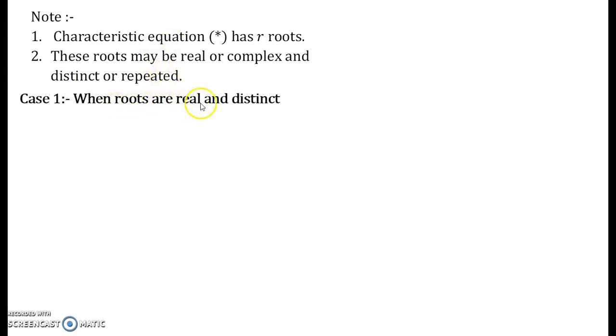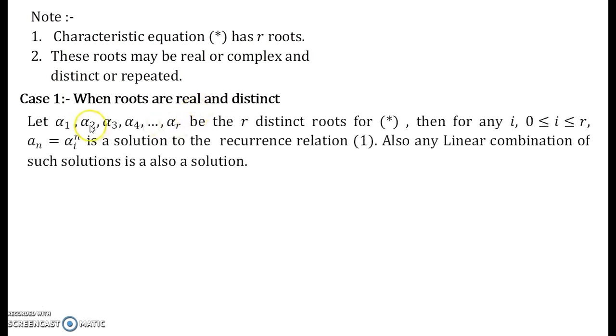Now based on the cases that we can derive from this observation let us see what to get. When the roots are real and distinct this is our first case. Let us see what is the procedure or what all things can happen over there. α₁, α₂, ..., α_r will be the r distinct roots for our characteristic equation.